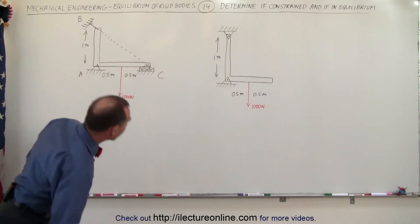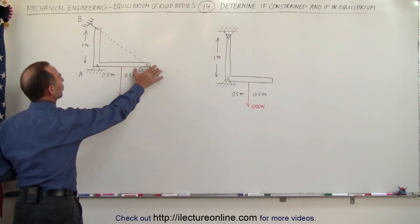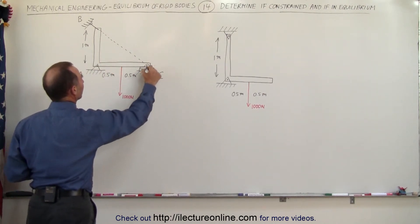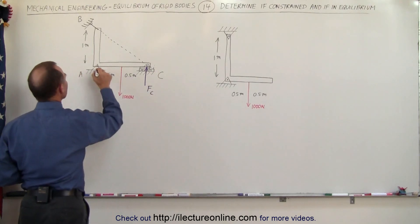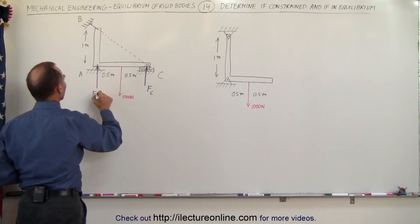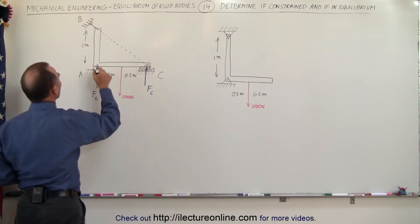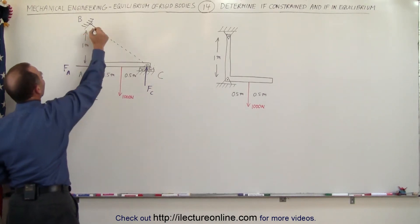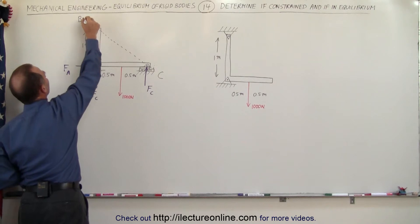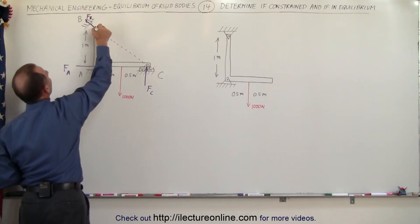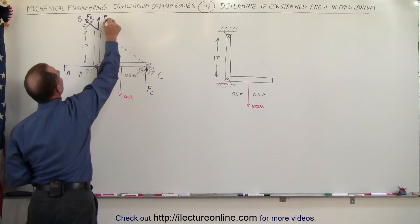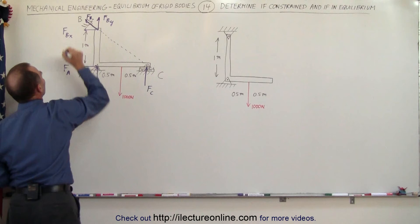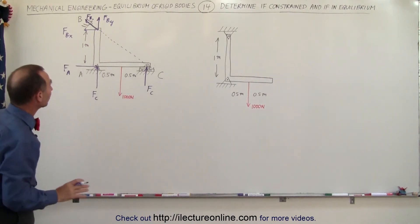For the first of the two examples, this support is on rollers and this one is connected, so the only force acting here would be in this direction — that would be the force at C. Here we'll have two forces: one at C, force at A, and then we have force at B which will be at a 45-degree angle, with a vertical component force at B in the y-direction and a horizontal component force at B in the x-direction.